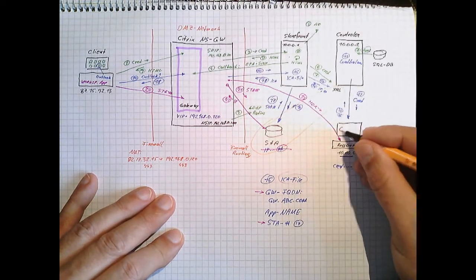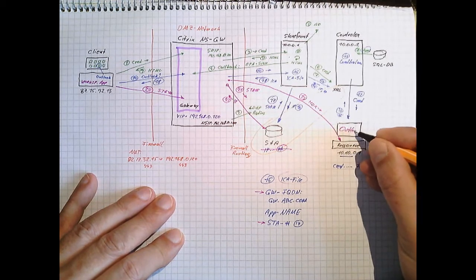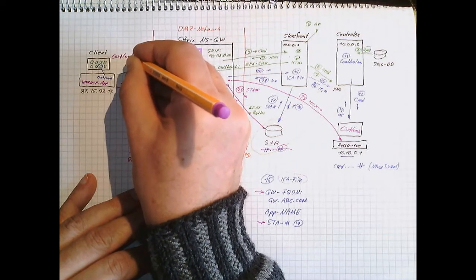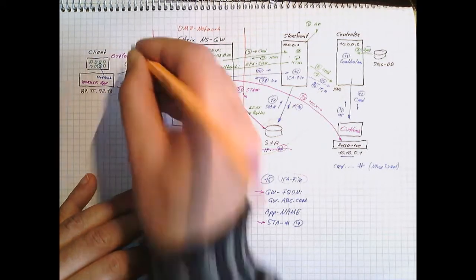And we can now create an HDX connection to the resource. This is number 23, the HDX connection. This will be TCP or UDP based. And the user will see Outlook. So that's it. We are finished.